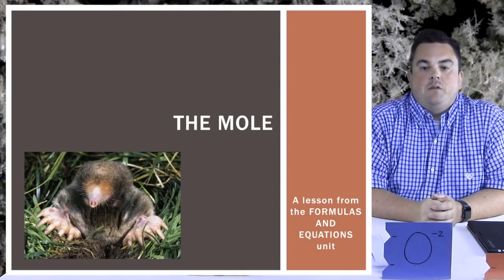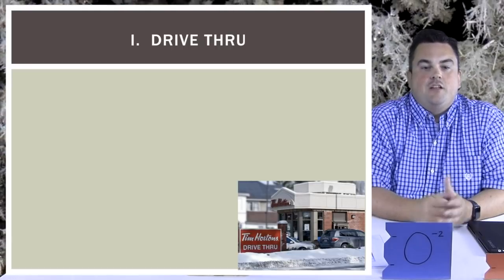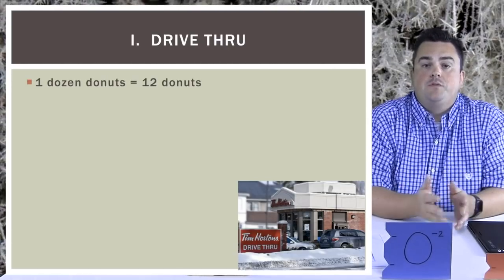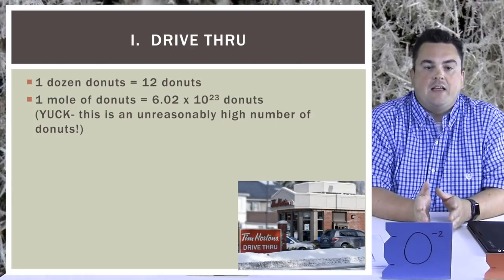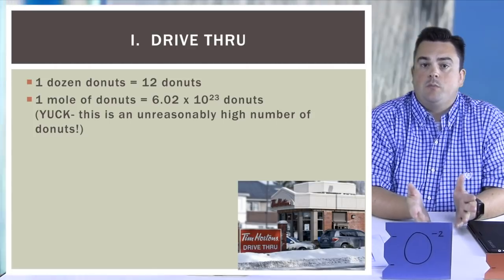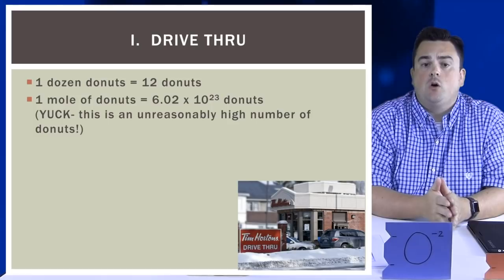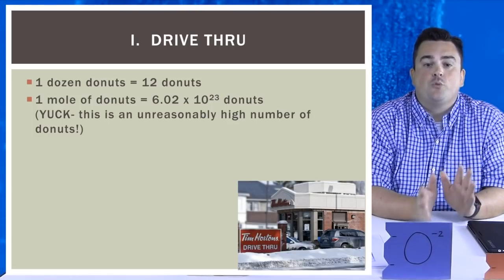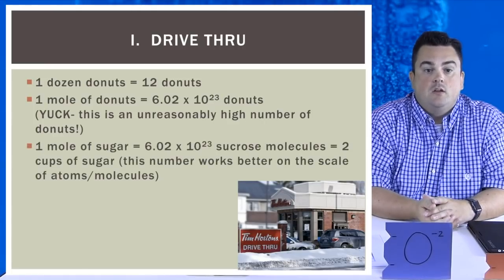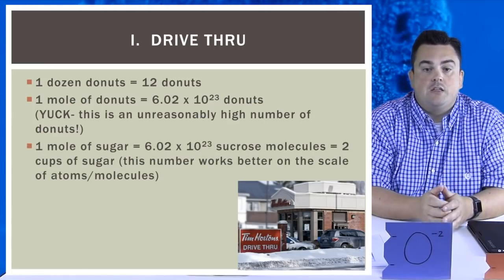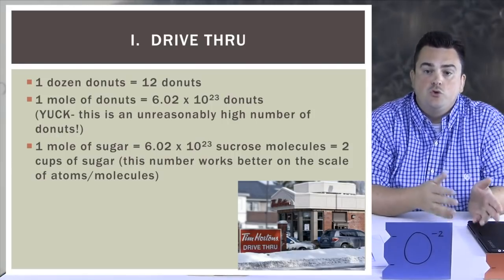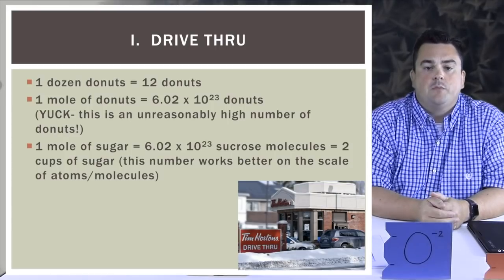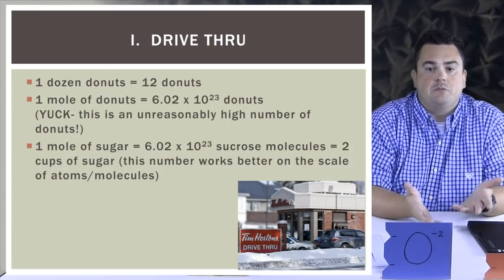The mole — a lesson from the formulas and equations unit. One dozen donuts means a number: it means 12 donuts. And just like that, one mole of donuts means a number too — it means 6.02 times 10 to the 23rd donuts. That is a disgusting and unreasonably high number of donuts. One mole of sugar is 6.02 times 10 to the 23rd sucrose molecules, which is about 2 cups of sugar. This number works better on the scale of atoms and molecules.